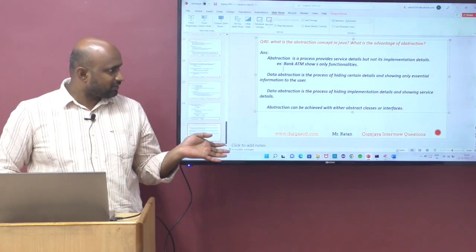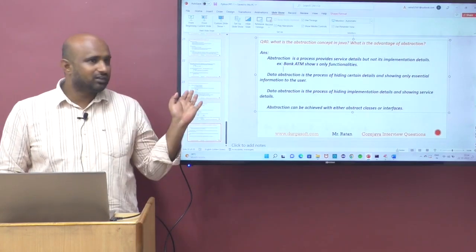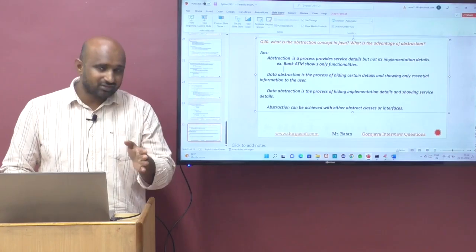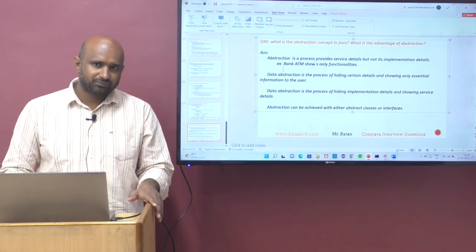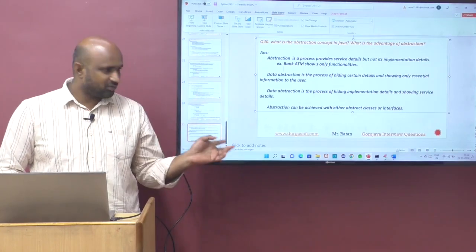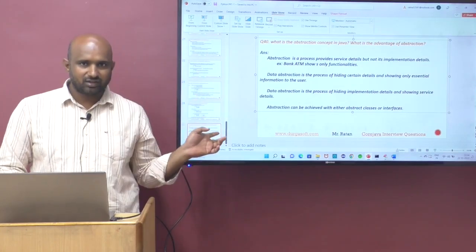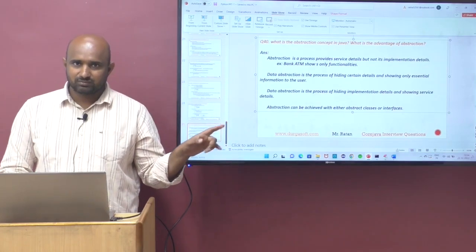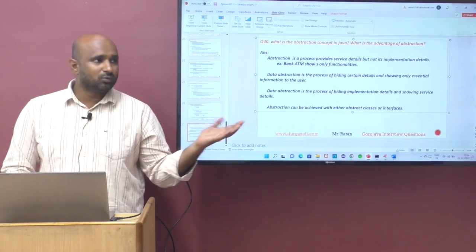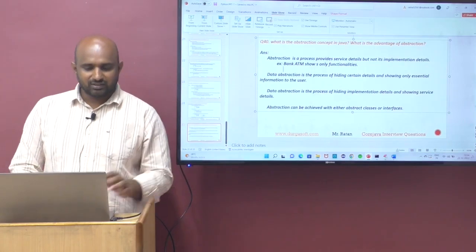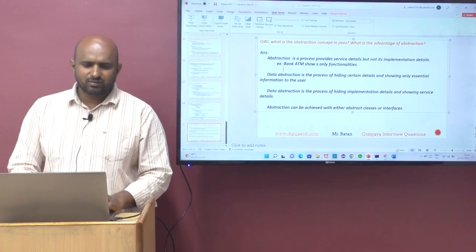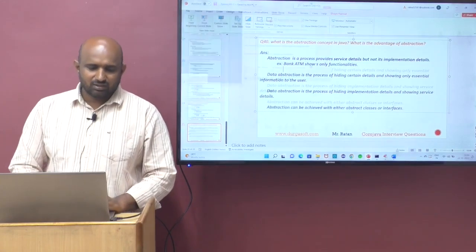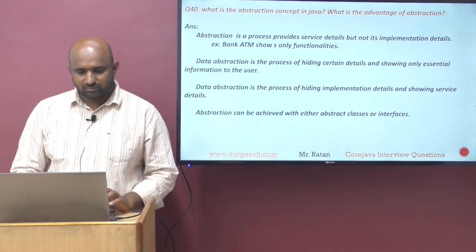Your TV is also abstraction — it shows only the screen. Where are the implementations? It's showing only necessary things. We have the touch screen, we have the on button and off button. Implementations are internal. That is called abstraction.